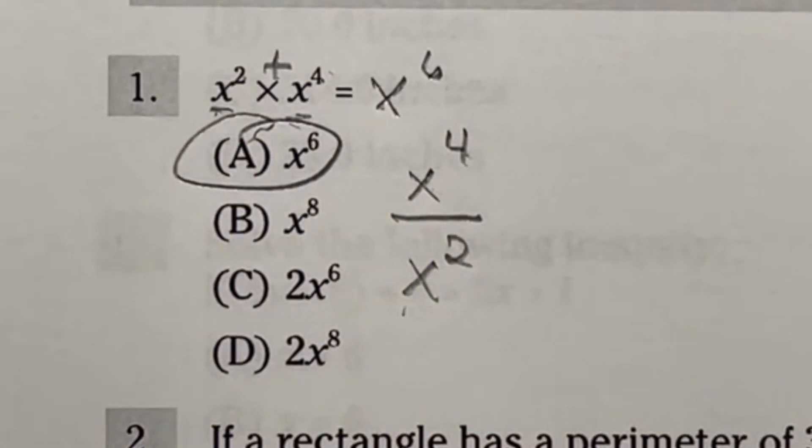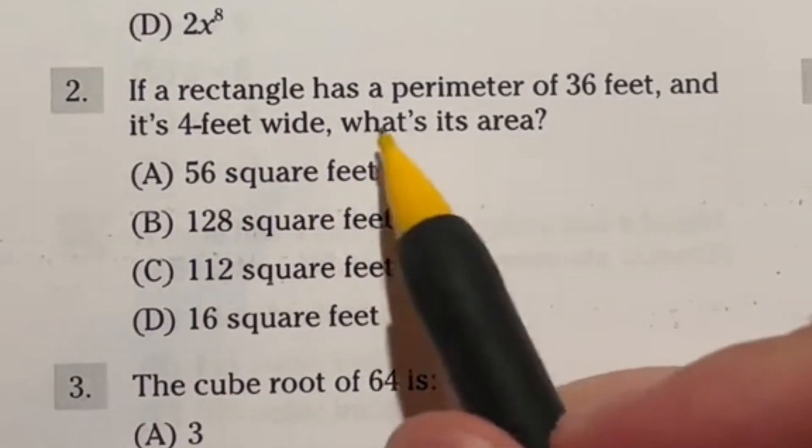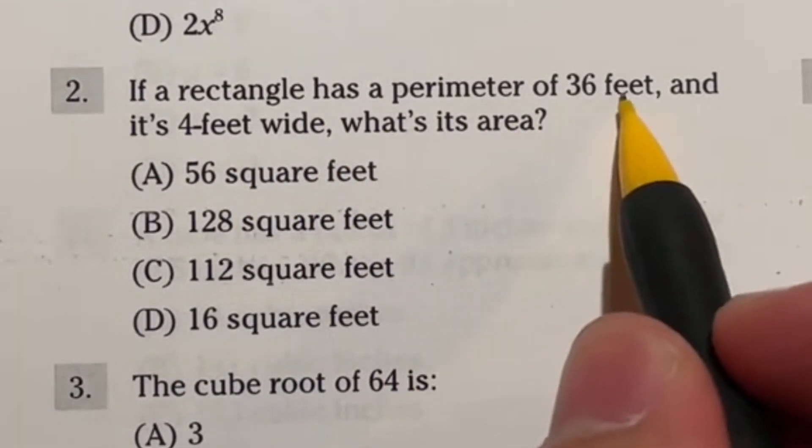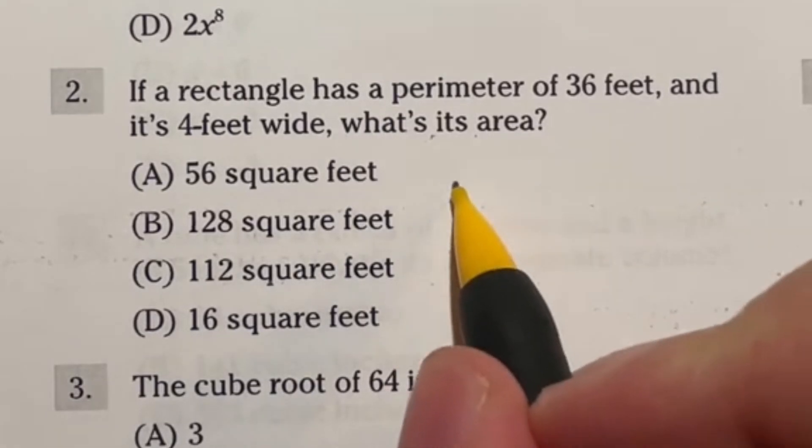We're going to go through this entire test, so keep checking out each day and we'll see what our next question is going to be. So this question number two says, if a rectangle has perimeter of 36 feet and it's four feet wide, what's its area? So let's take a look here.